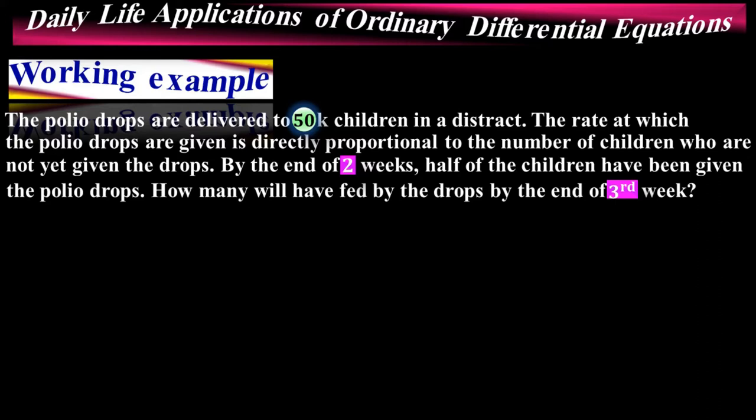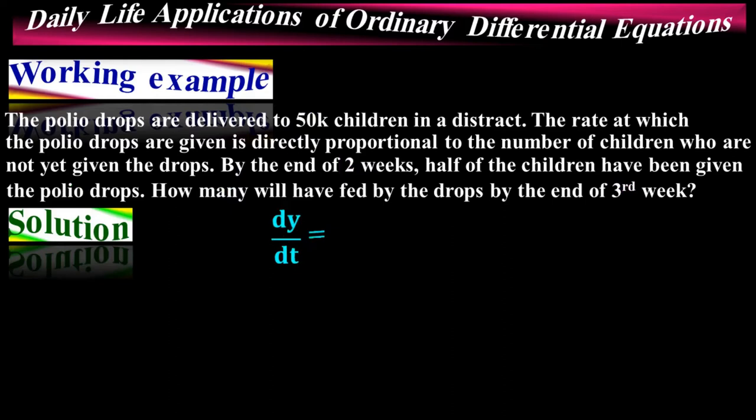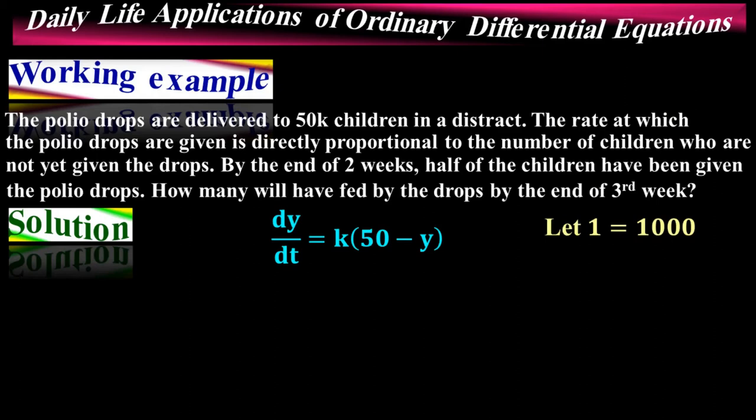This is a typical first-order ordinary differential equation. Here, 50 represents 50,000 children (where 1 equals 1,000), and y is the number of children that have been given the drops. Separating variables, bring all y terms to one side and t terms to the other, giving: 1/(50 − y) dy = k dt.